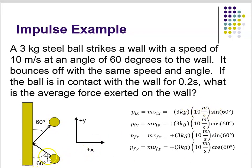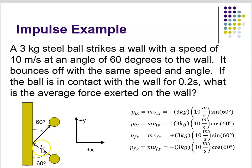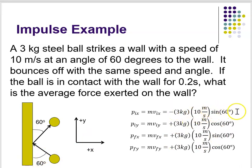Since my angle is with respect to the y axis, that means for my x component I have to use the sine of 60. If you envision a little right triangle where the velocity vector is the arrow, here's my 60 degrees, and my x component is the line that connects the ball to the wall horizontally — that component is opposite the 60 degree angle, which is why I use the sine. So I have minus three kilograms times 10 meters per second times the sine of 60, which gives me my initial x momentum.